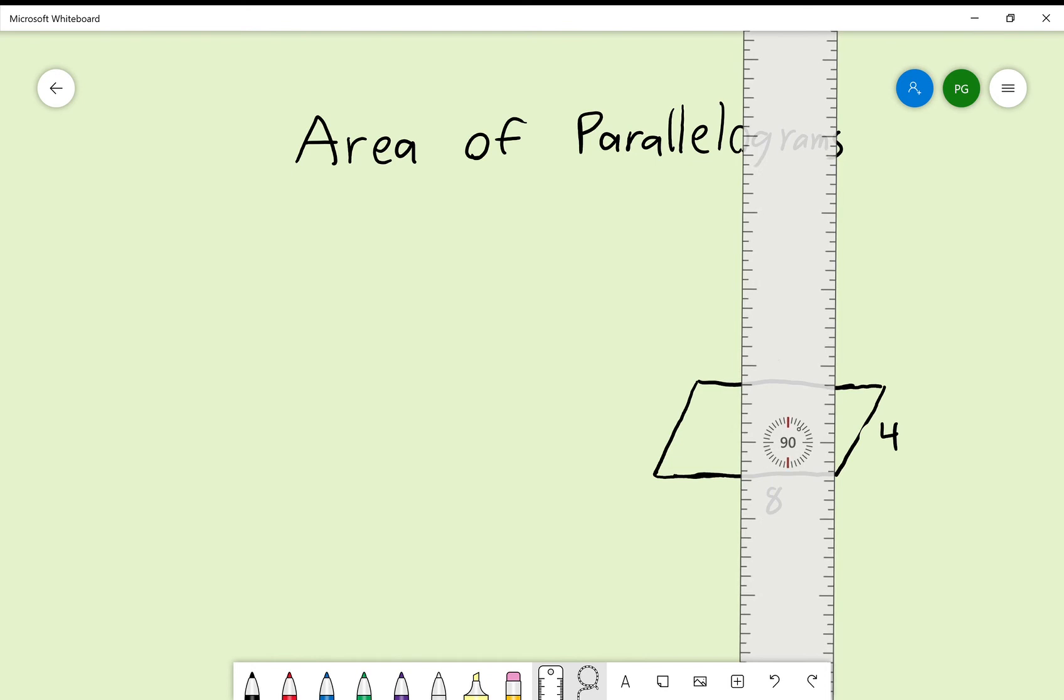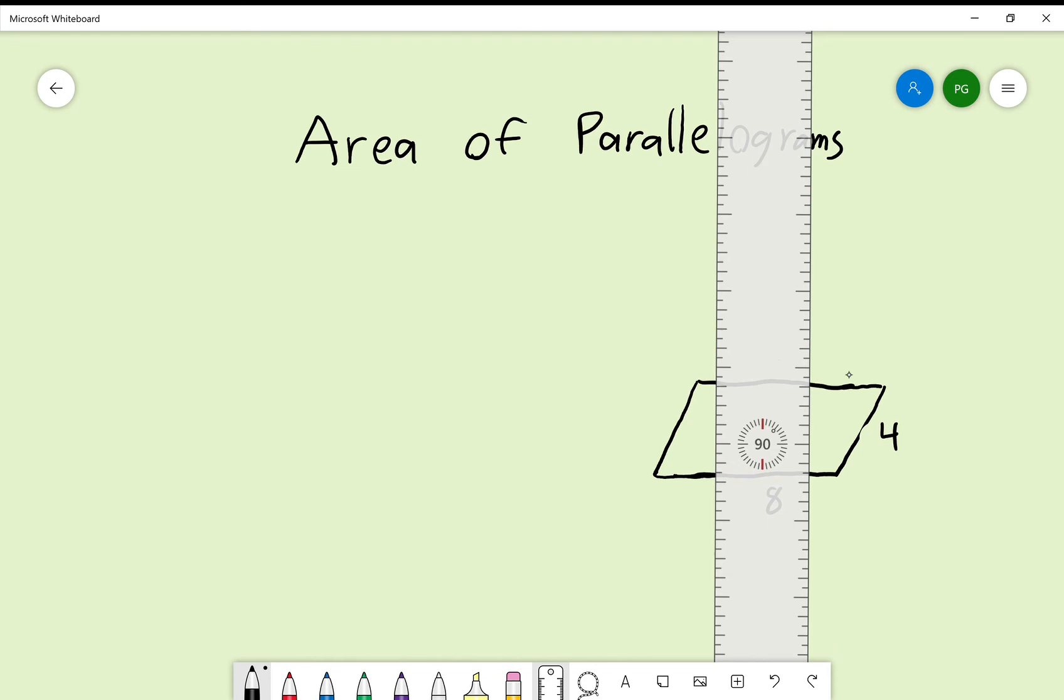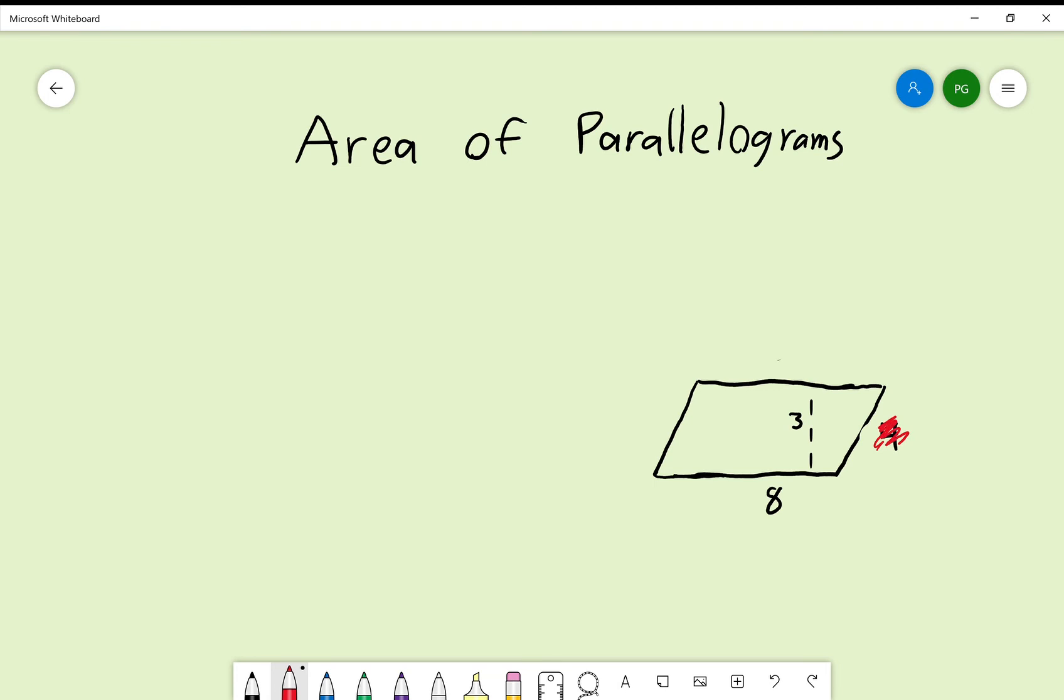Instead, I'm going to measure straight up. So in all of these parallelograms, you will almost always have a little special dotted line inside that says your actual height. So in this situation right here, whatever is on the side, this weird slanty number, you ignore it. Instead, you're going to multiply 8 times 3, which is 24, and that's the area of your parallelogram.